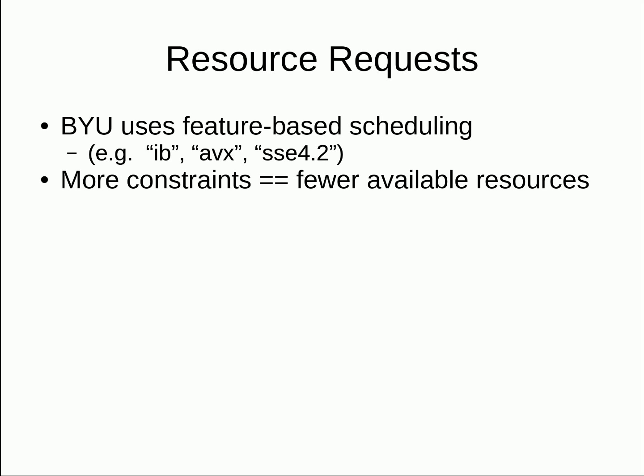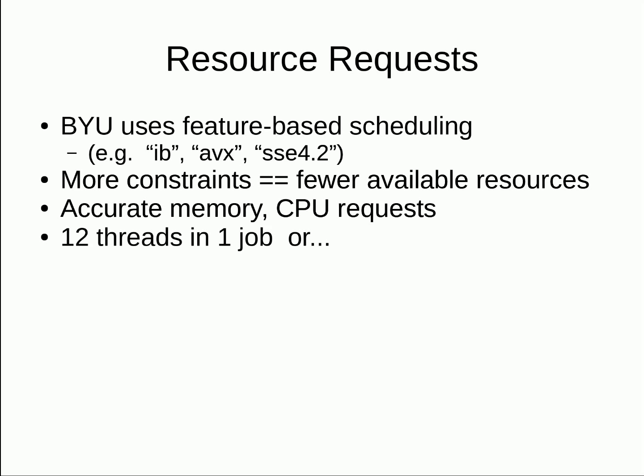Memory requests, core counts, etc. should all be tuned to only request what is needed. If possible, it may be better to reduce requirements and split things out into multiple jobs. Do you really need 12 threads in a job, or will one thread each in 12 separate jobs be more efficient? 12 threads may get the work done faster, but single-core jobs are easier to schedule and probably have a higher per-thread efficiency.